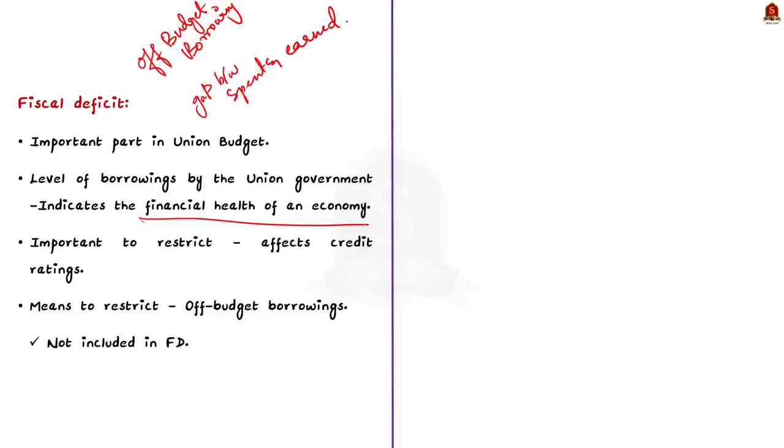So, why is it important? Because fiscal deficit is keenly watched by rating agencies, both the agencies inside as well as outside the country. And that is why most governments want to restrict their fiscal deficit to a respectable number. Now, one of the ways to do this is by resorting to off-budget borrowings. Such borrowings are a way for the central government to finance its expenditure while keeping the debt of the annual statement. So, that it is not counted in the calculation of fiscal deficit.